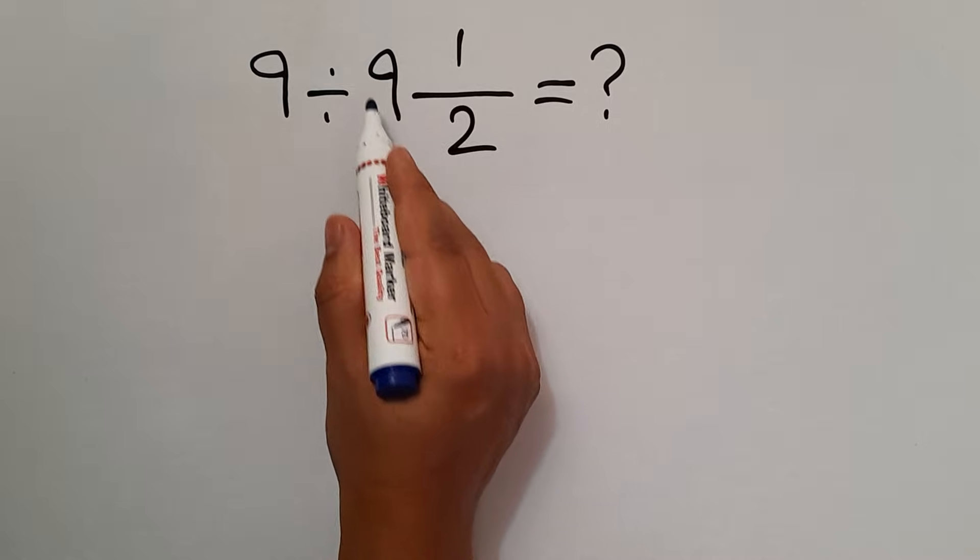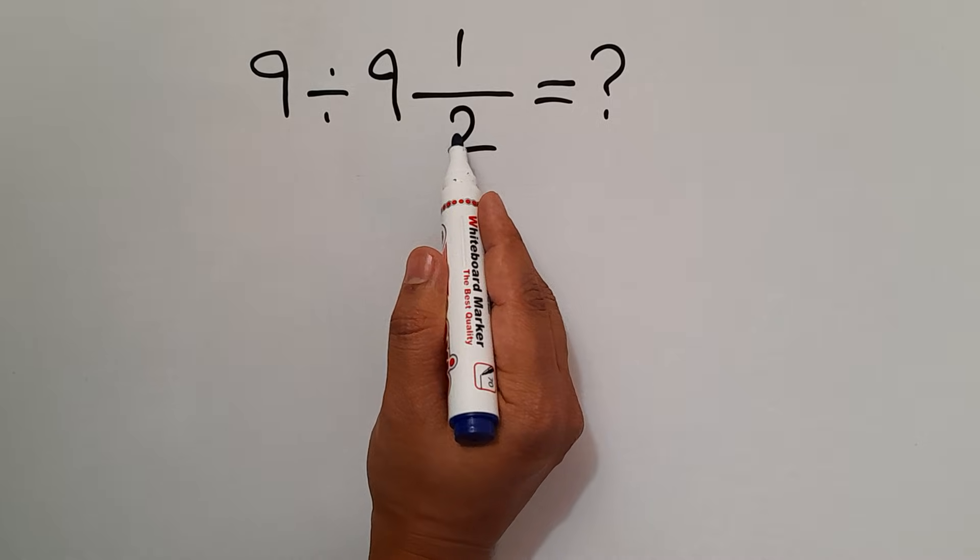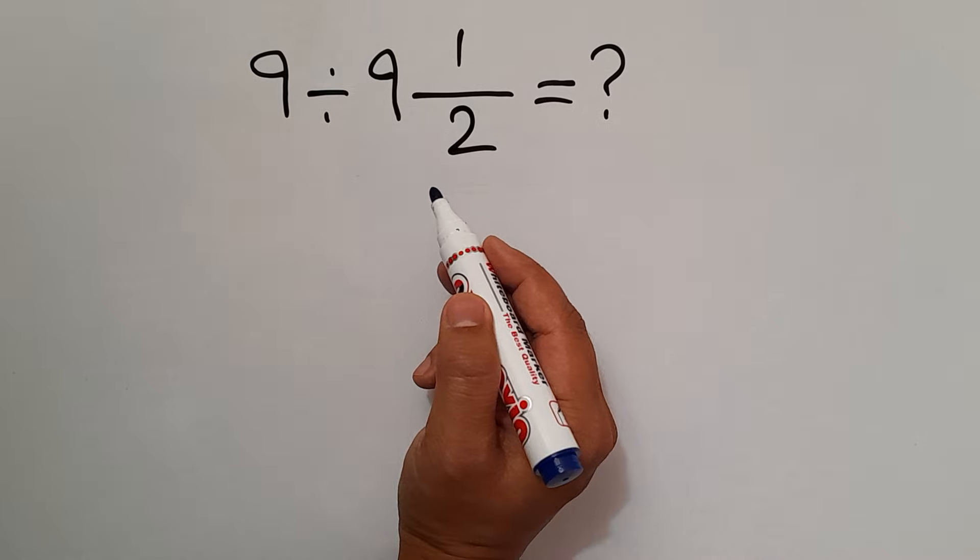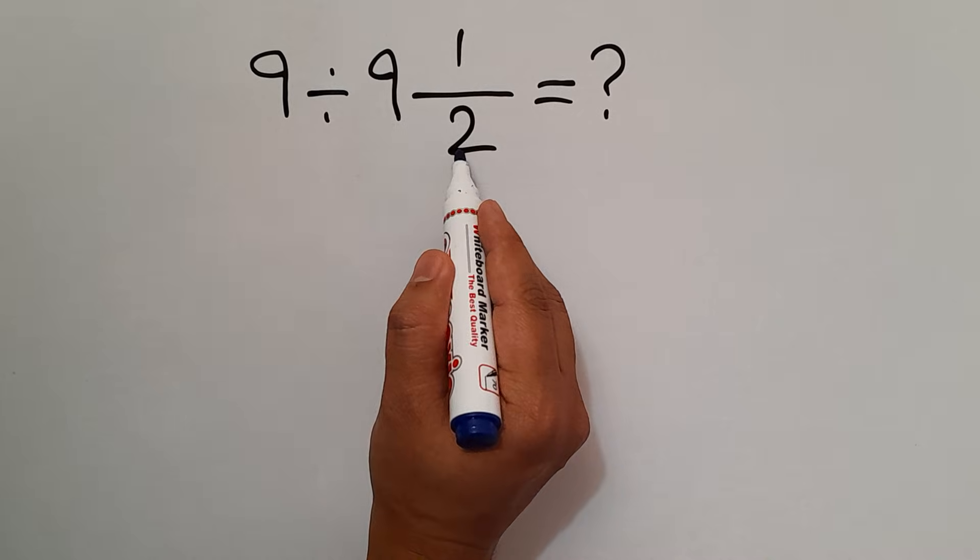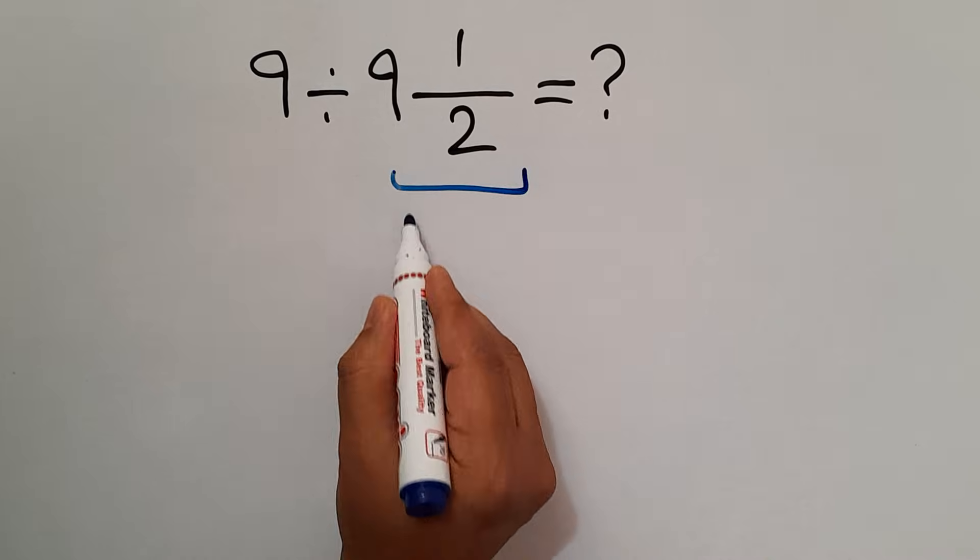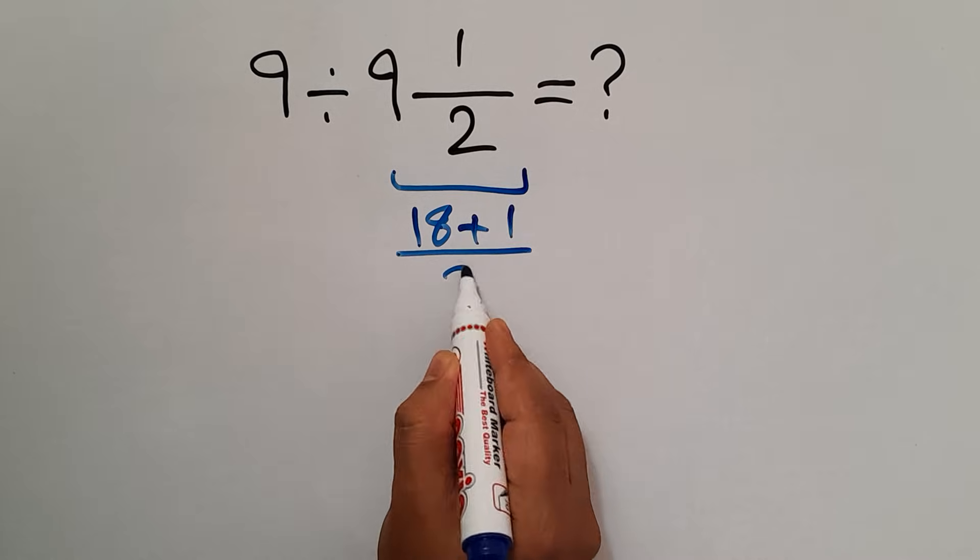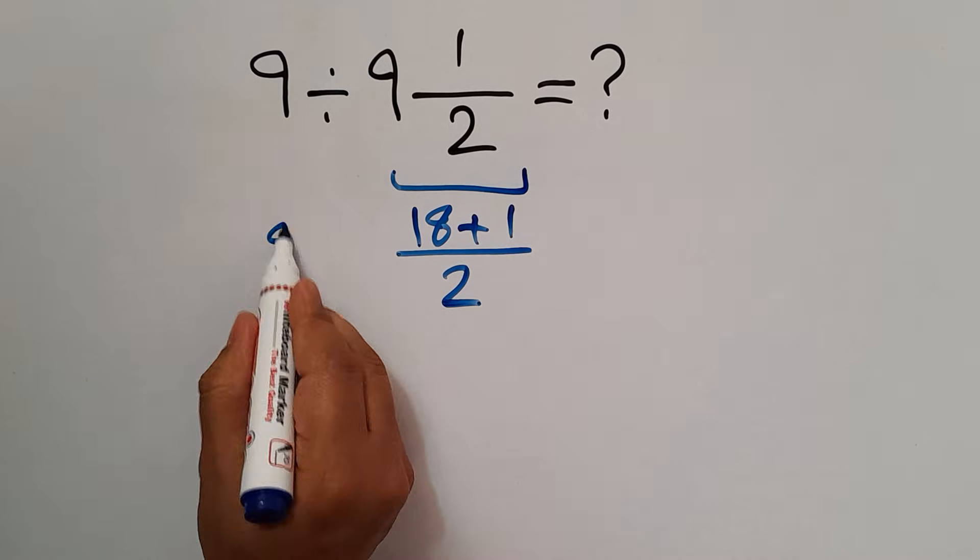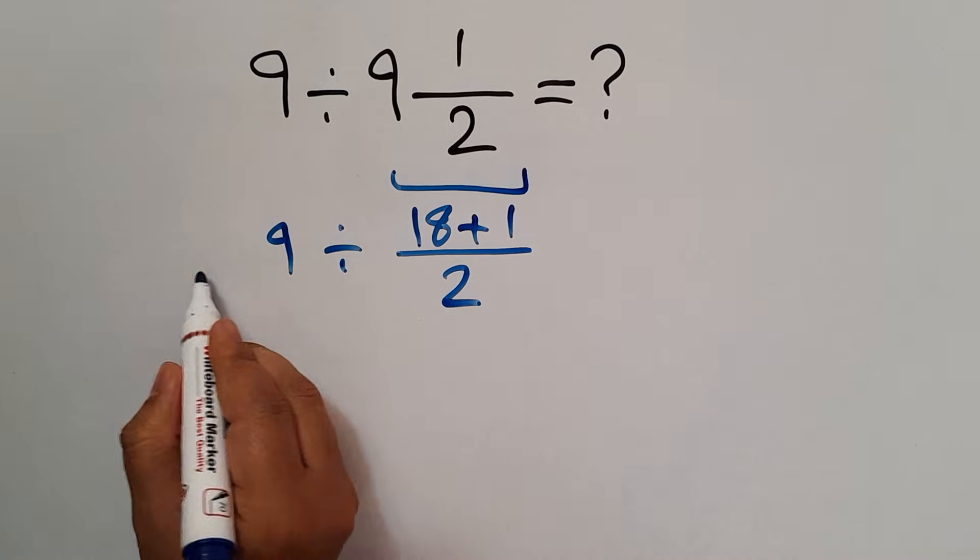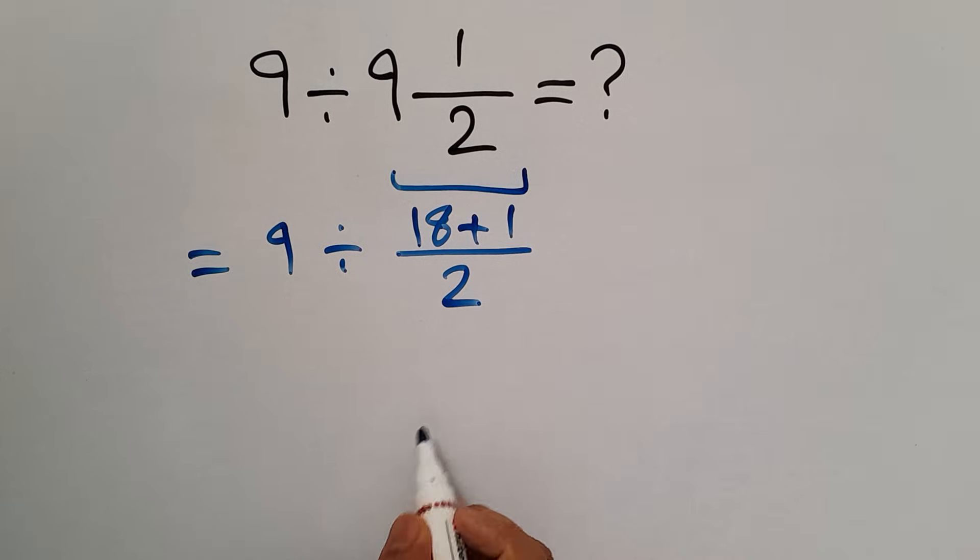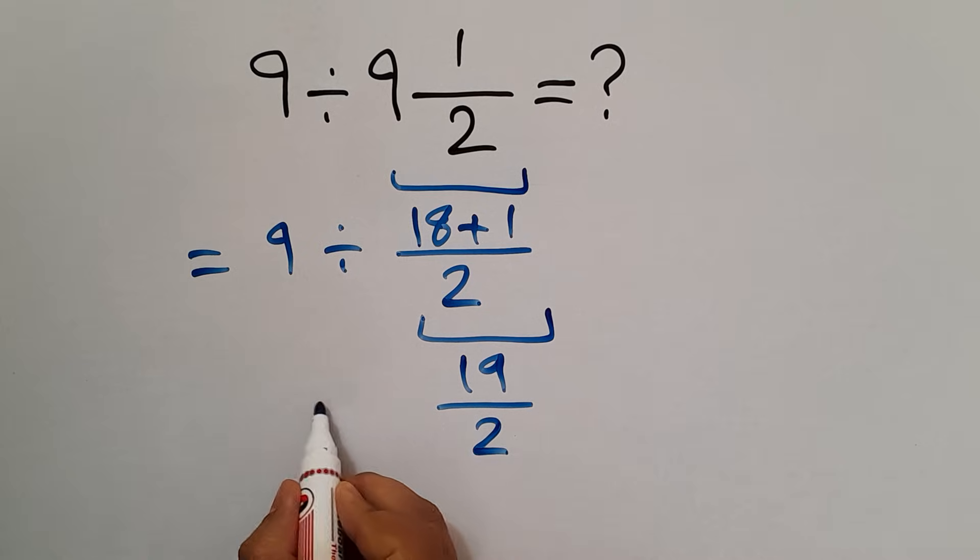First of all, let's change this mixed number to an improper fraction. 9 times 2 equals 18, 18 plus 1 over 2. We have 9 divided by this fraction. 18 plus 1 equals 19, so 19 over 2.